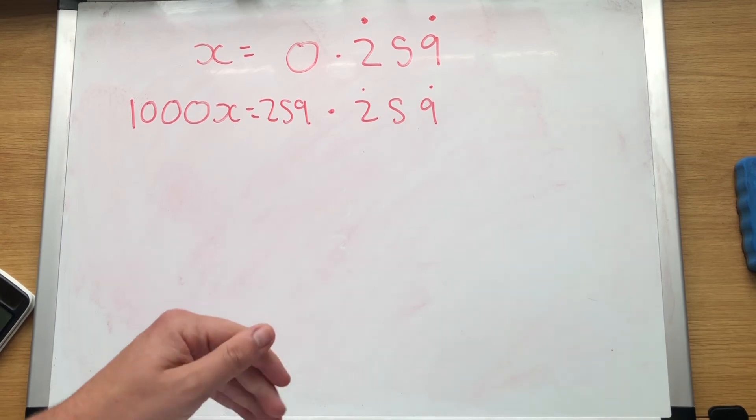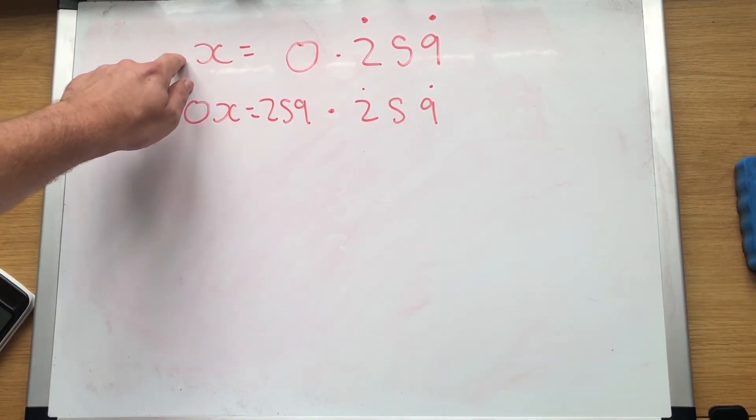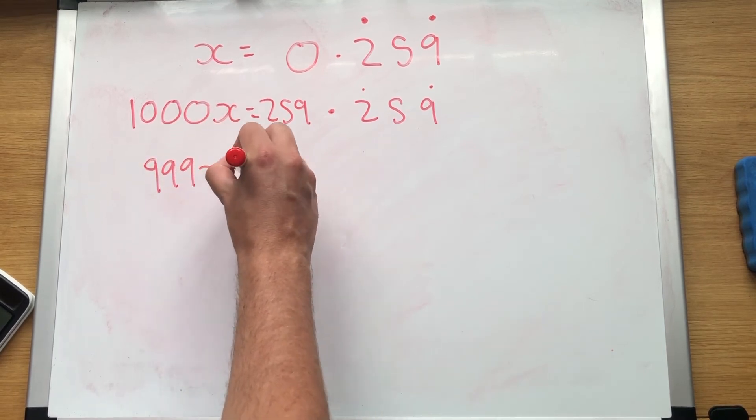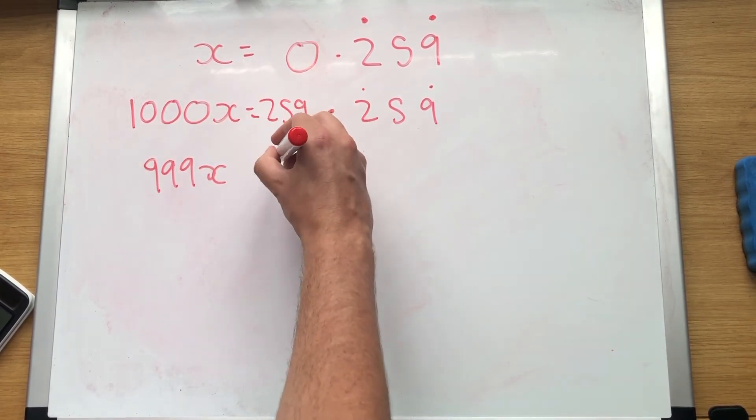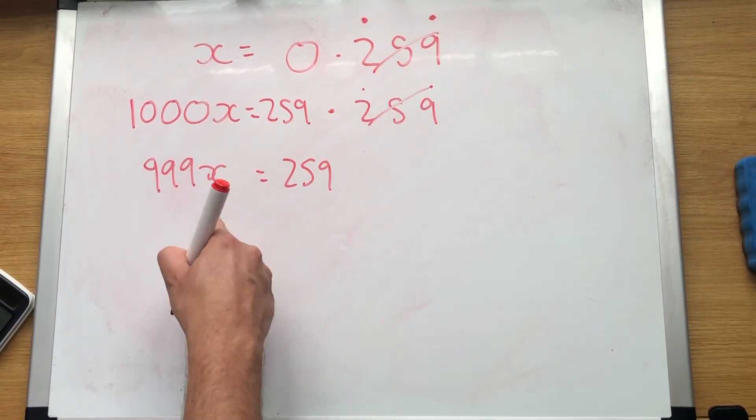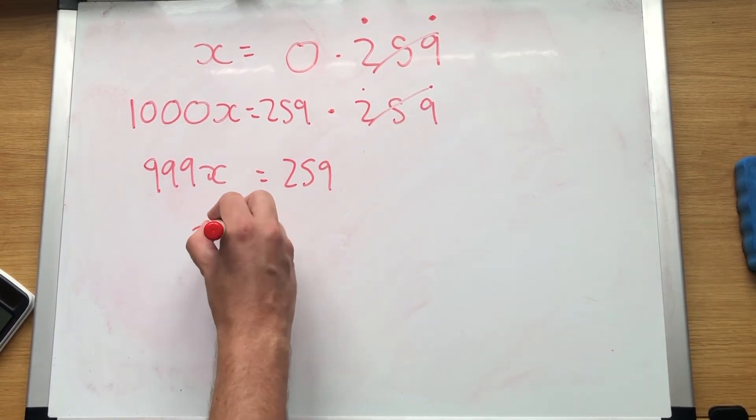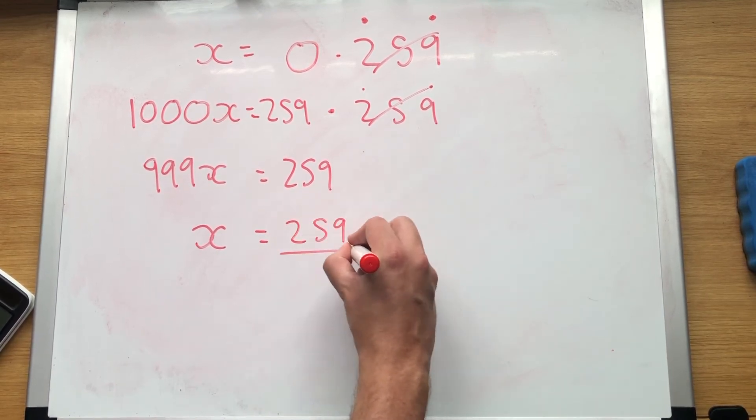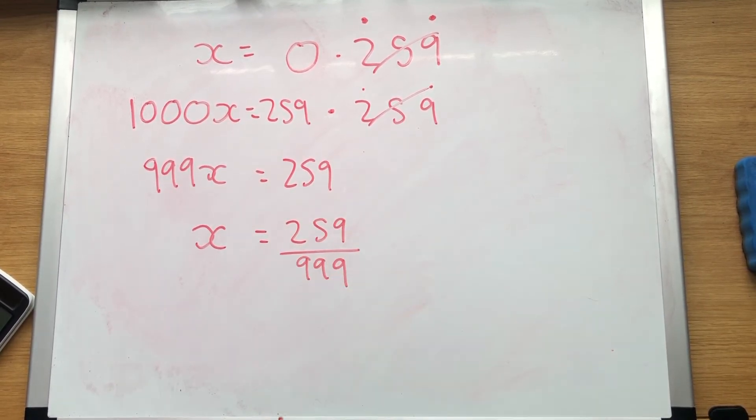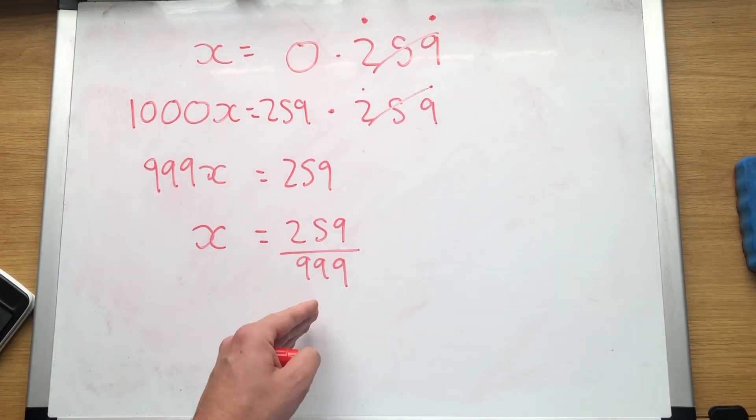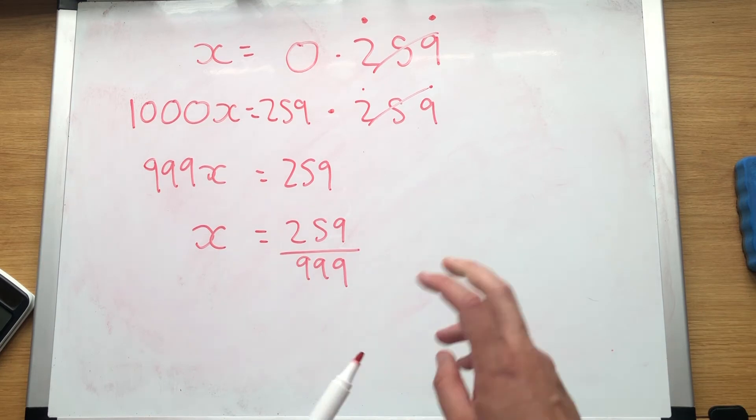Now, same as last time, my favourite step. 1,000x take away x: 999x. 259 take away 0, and then these two cancel out. Make x the subject by dividing both sides by 999. So 259 over 999. And we've done it again. We've turned that horrible recurring decimal into a gorgeous fraction.